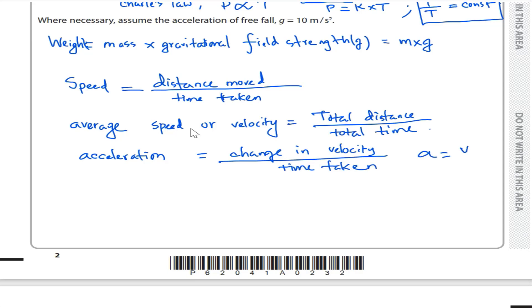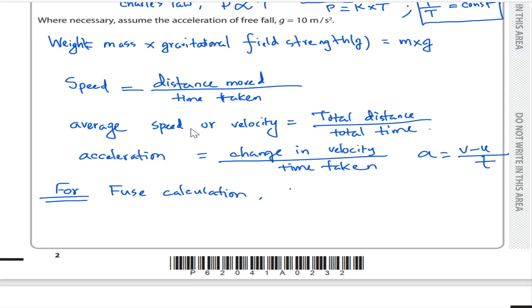Acceleration A equals V minus U, where V is the final velocity and U is the initial velocity, divided by time. For fuse calculation, current I equals power divided by voltage.